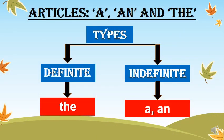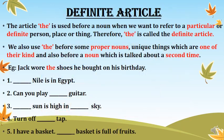Articles are of two types: definite and indefinite. The definite article is 'the' and the indefinite article is 'a'. The article 'the' is used before a noun when we want to refer to a particular or definite person, place or thing.